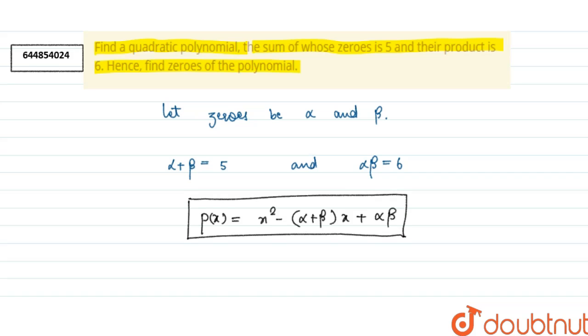Now what we have to do, we have to just put the values of alpha plus beta and alpha beta. So x square minus 5x plus 6. So this is the quadratic polynomial p(x).